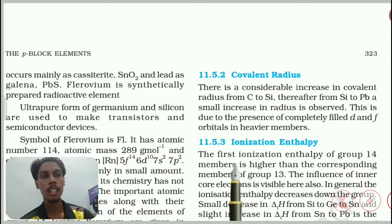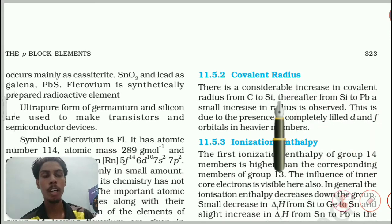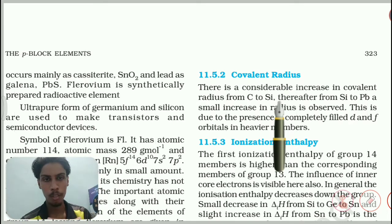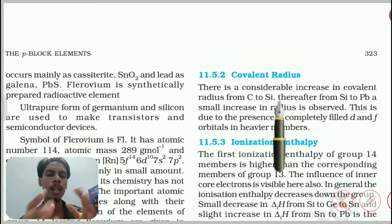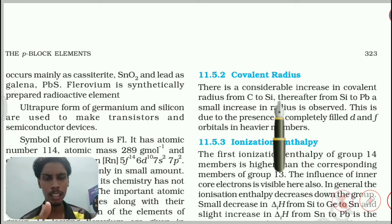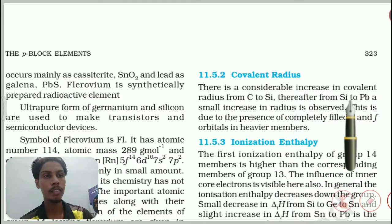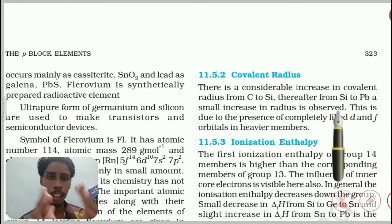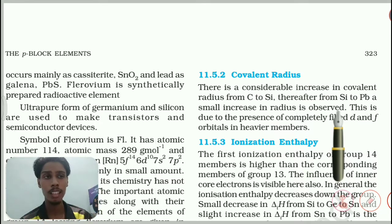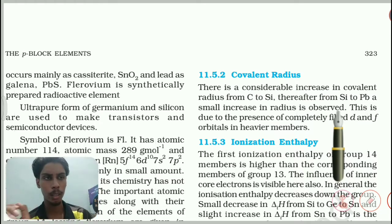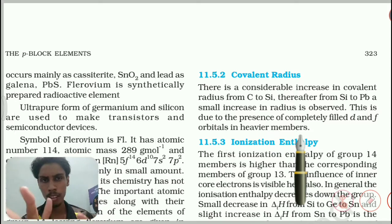There is a considerable increase in covalent radius from carbon to silicon, because down the group the number of shells increases and size increases drastically. From silicon to lead, only a small increase in radius is observed, due to the presence of completely filled d and f orbitals in the heavier members.